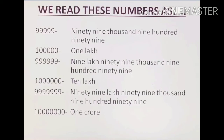Then seven nines, which is read as ninety nine lakh ninety nine thousand nine hundred and ninety nine. Finally, one followed by seven zeros, which is one crore.